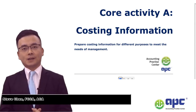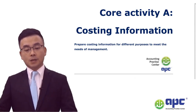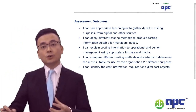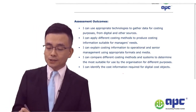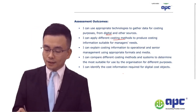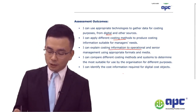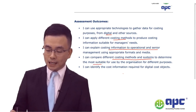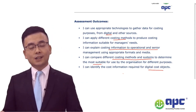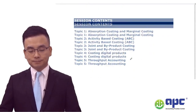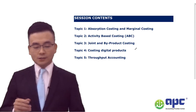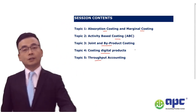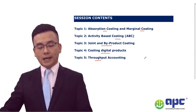Welcome back to our operational case study exam. Let's revise core activity number A, which is all about costing information. CIMA publishes the assessment outcomes, and you will need to tell the examining team that you understand digital costing and other costing methods, and costing information to operational and senior management, and different costing methods and systems to determine which one would be suitable. We will split this section into five topics: absorption and marginal costing, ABC, joint by-product costing, digital product costing, and throughput accounting.